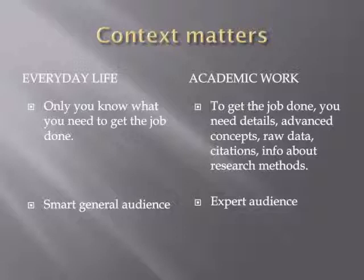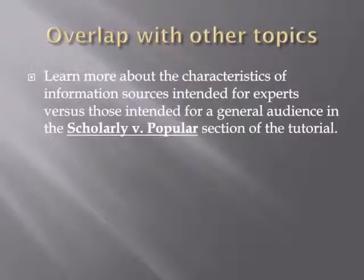But when you're writing a research paper, you need access to the raw data. You need to know the research methods. You need to see the citations so you can look up the ones that are relevant to you. You need the level of detail and the advanced concepts. Those kinds of things will only be found in information sources that were created for an expert audience. There is a big overlap between this topic of intended audience and the topic of scholarly versus popular information sources. That's because one of the two factors that define scholarly sources is that they are written by experts for an audience of experts.